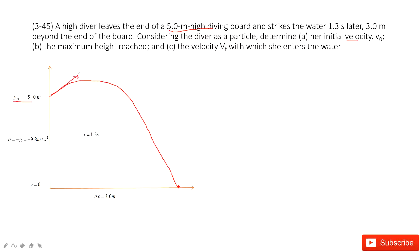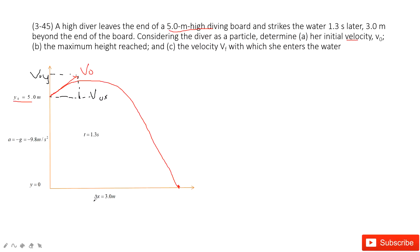For v0, we can see it must be in two components: x component v0x and y component v0y. For the x component, it's easy — we know the displacement and we know the time taken. So we can get v0x just by using displacement divided by time t, because at the x component the velocity is constant.